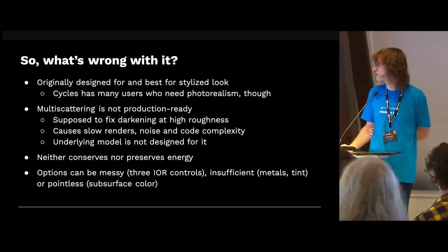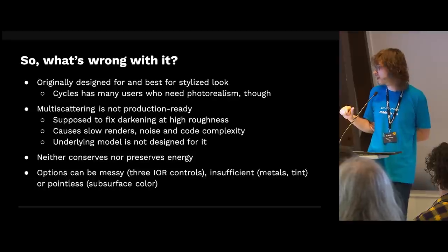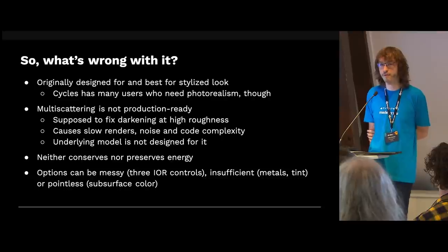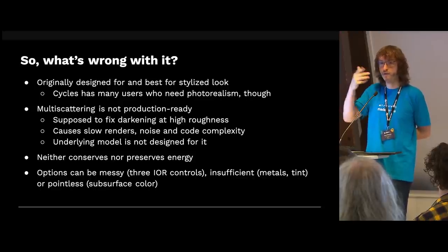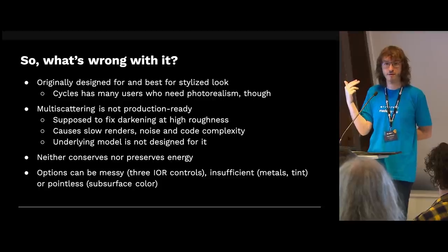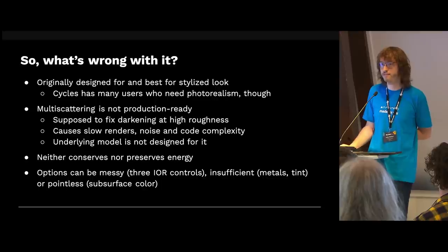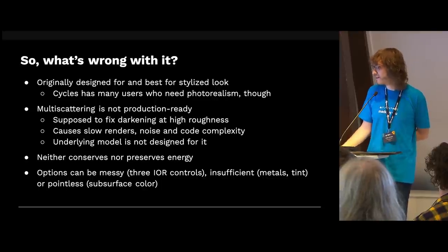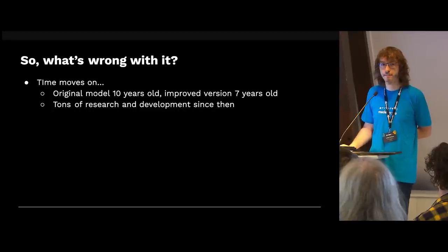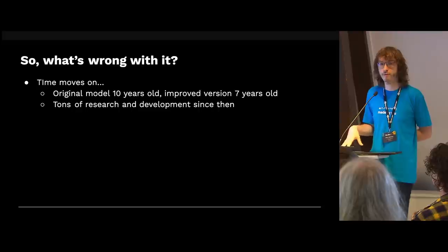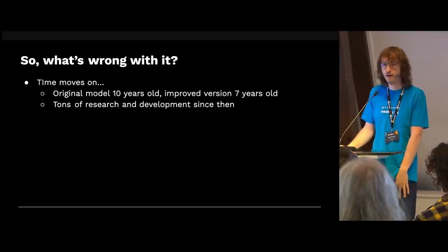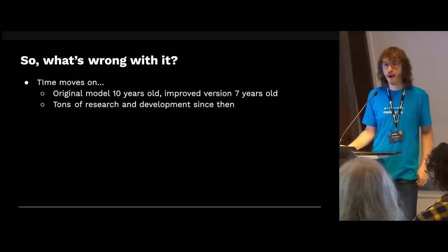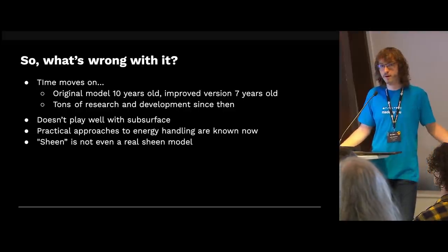Some options are just not there that users might want — on the metal side in particular, there are things we could add. And some controls are just kind of pointless, like the subsurface color: people hook up complex shaders to this input, but all it does is mix the subsurface color with the base color when you drag up the subsurface slider. Because people usually set the subsurface slider to like 0.01, it barely has any influence, but a lot of people don't know that. And simply, time moves on — the original paper came out in 2012, improved in 2015, Cycles got it in 2017. In the last five years there's been a lot of new research that addresses many of the problems I just mentioned.